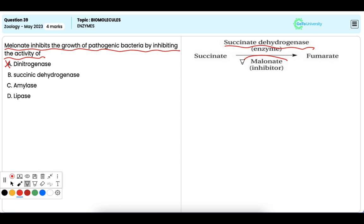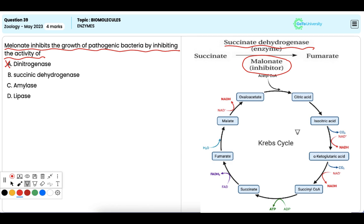By inhibiting this enzyme, malonate prevents the normal progression of the Krebs cycle, thereby inhibiting the growth of pathogenic bacteria that rely on this pathway for energy production. Thus, it is the correct option.